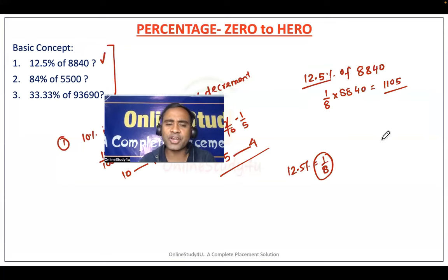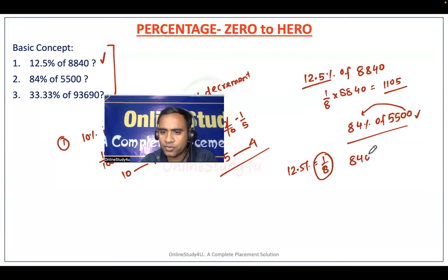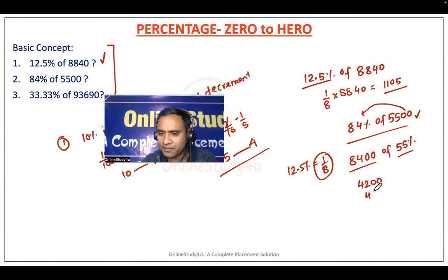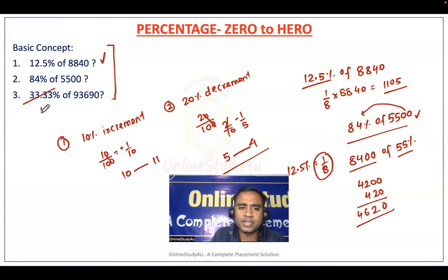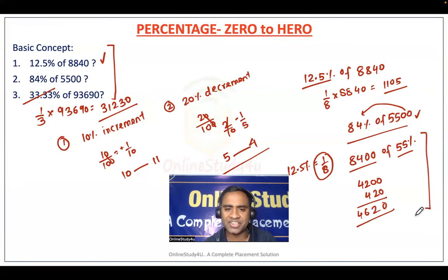At the end of the video, everything will become crystal clear. For example, 84% of 5500 — you can transfer the zero and it becomes 8400 of 55%. Now 55% is easy: 50% is half of 4200, which is 2100, and 5% is 420, so the answer is 4620. For 33.33%, it is nothing but 1/3 into 93690, giving 31230. These are amazing tricks with complete explanation.